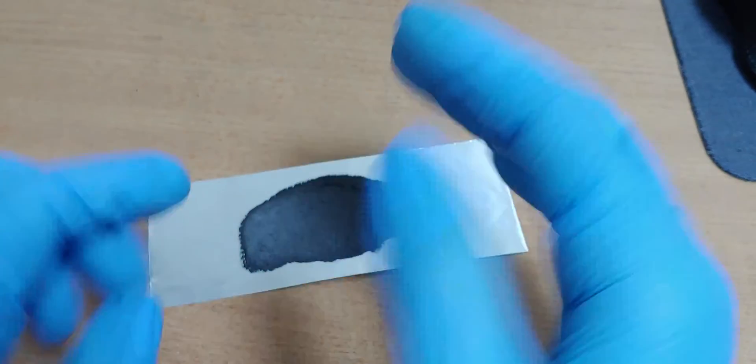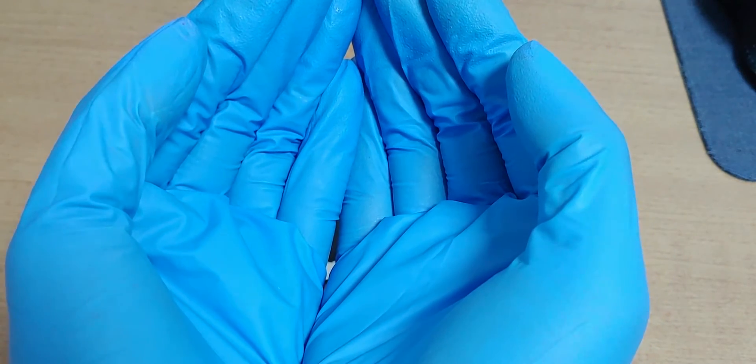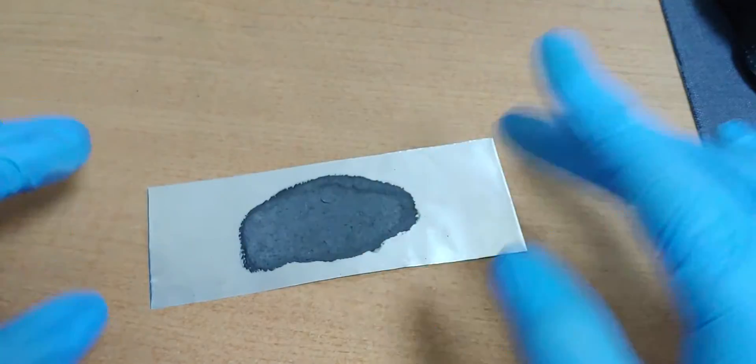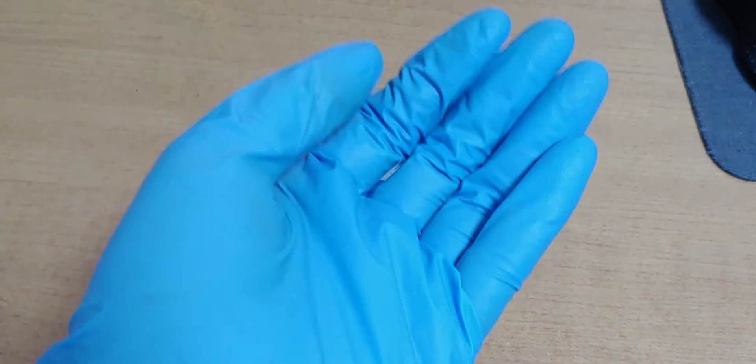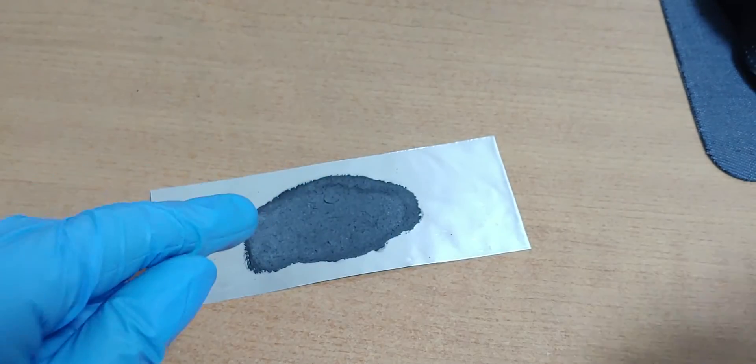In this graphene graphite electrode, we can make a lot of curved areas, curved surfaces, to store more ions. So I think this can be good.